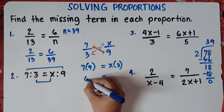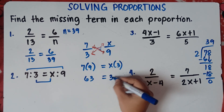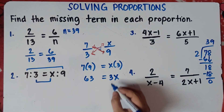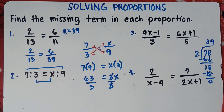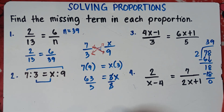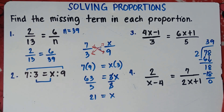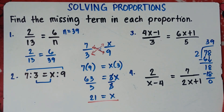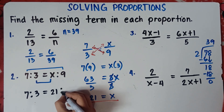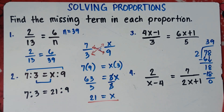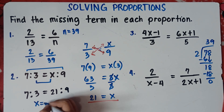So this will be 7 times 9 equals x times 3, or 3 times x — same answer — that is 3x. 7 times 9 is 63, equals 3x. Divide both sides by 3 to cancel out and find the value of x. 63 divided by 3 is 21. So x equals 21. That's the answer for number 2.